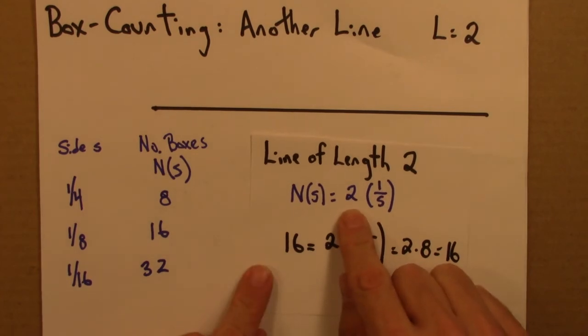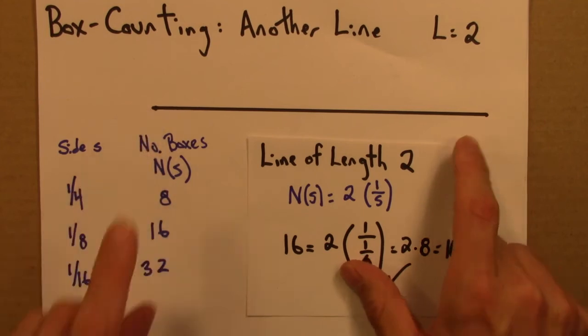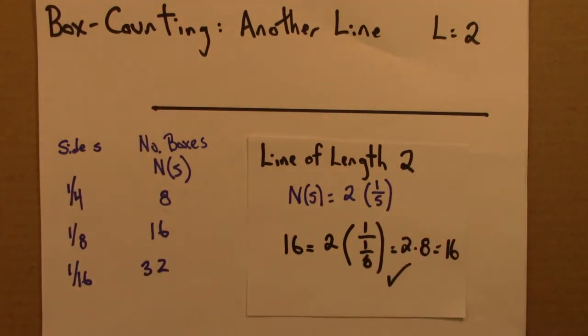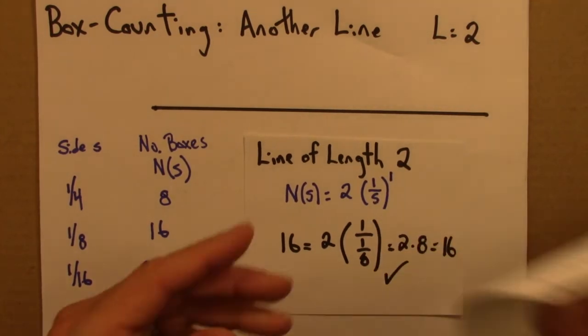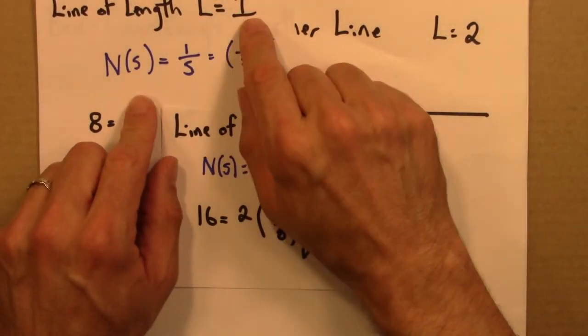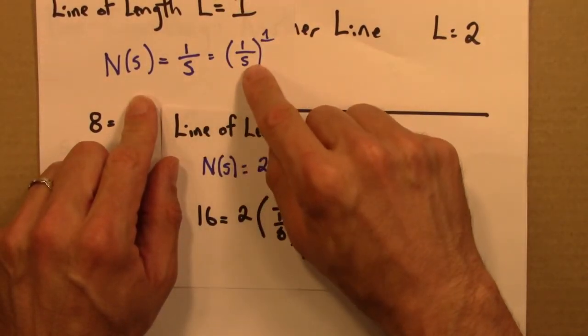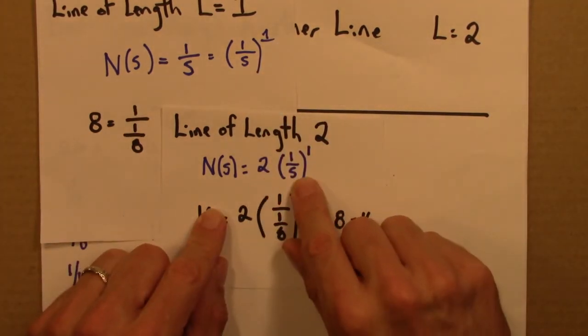So this too reflects the fact that the line has a length of 2. But the exponent here - remember 1/s is the same as (1/s)^1 - reflects the fact that this is still one-dimensional. So for a line of length 1, it's 1 × (1/s)^1. A line of length 2 is 2 × (1/s)^1.